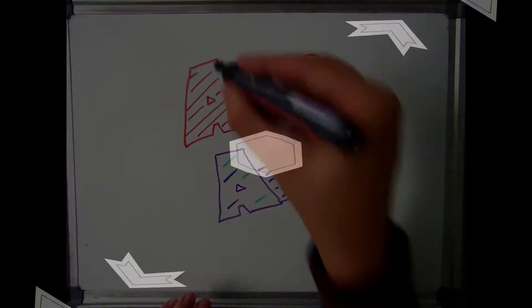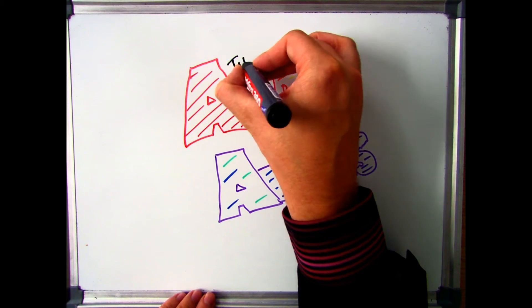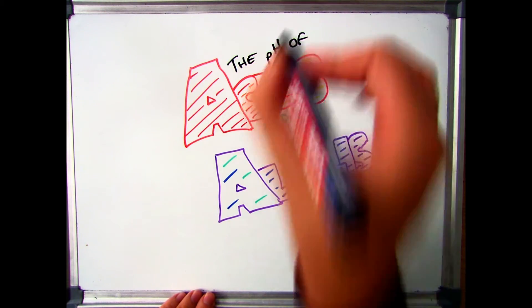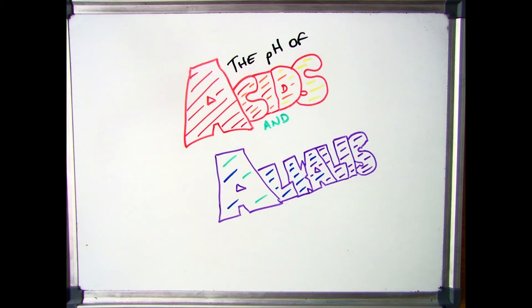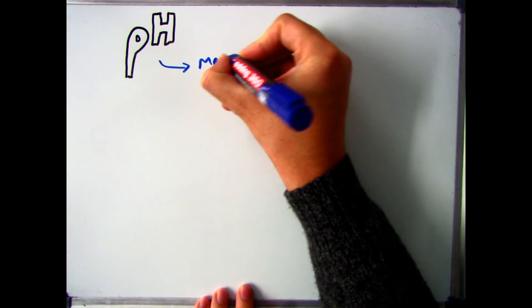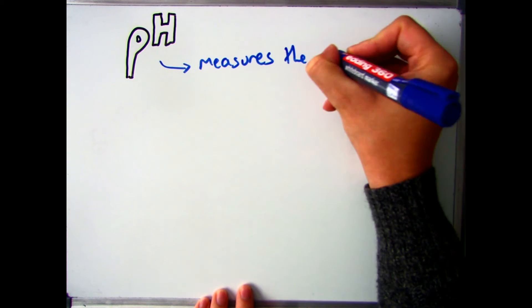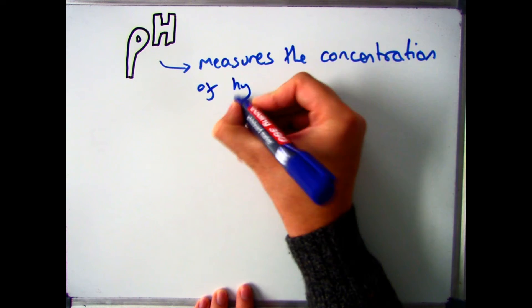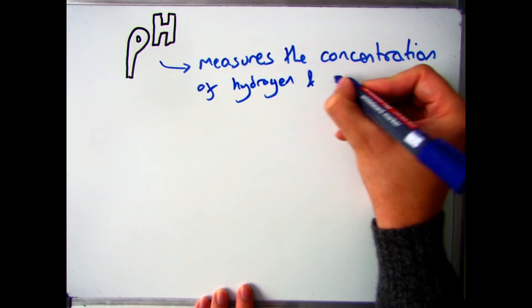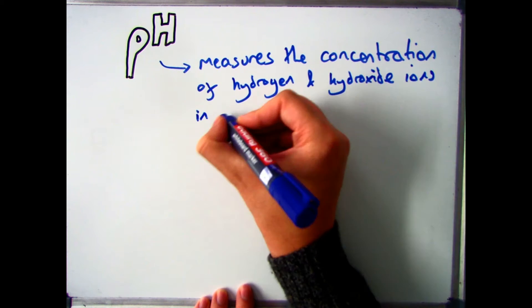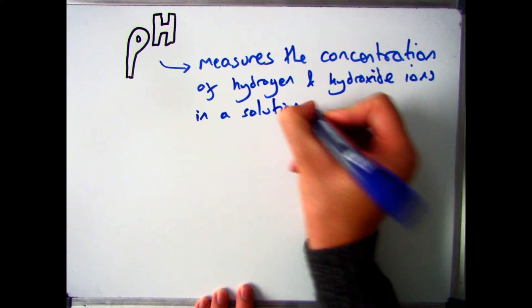Hello there and welcome to this video which is looking at the pH scale and what the pH actually measures and tells us. The first thing it's important to know is what the pH actually measures, and that is the concentration of hydrogen and hydroxide ions in any solution.